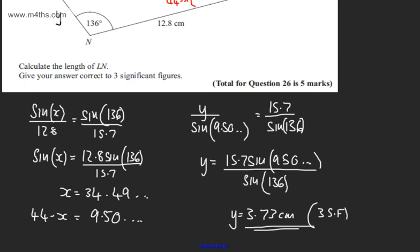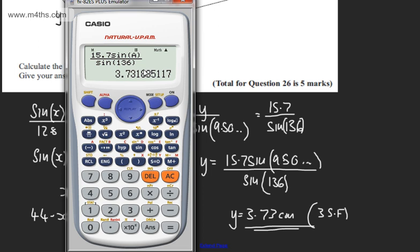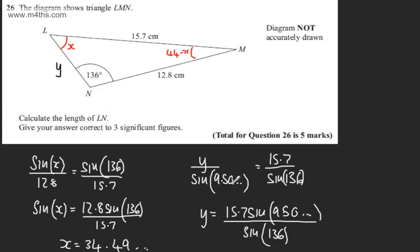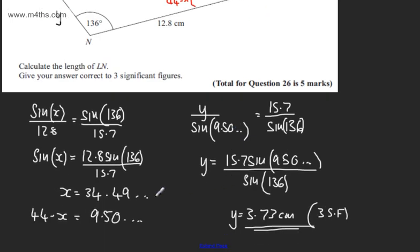If you want to give more decimal places and then round your answer, you can. That's the final answer. LN is 3.73 centimeters, correct to three significant figures. Alright, thank you.